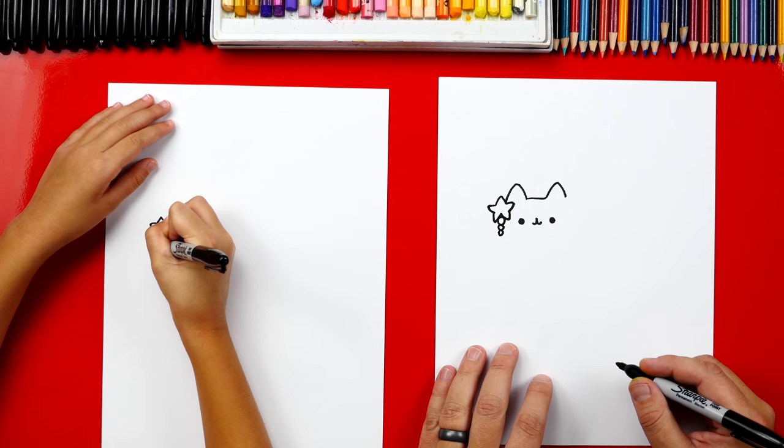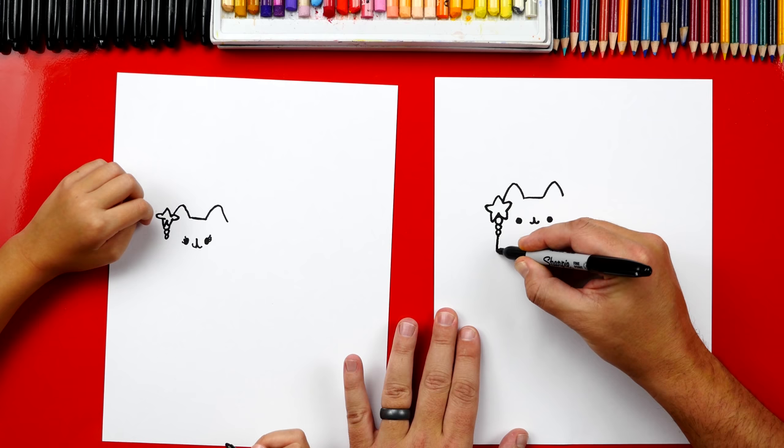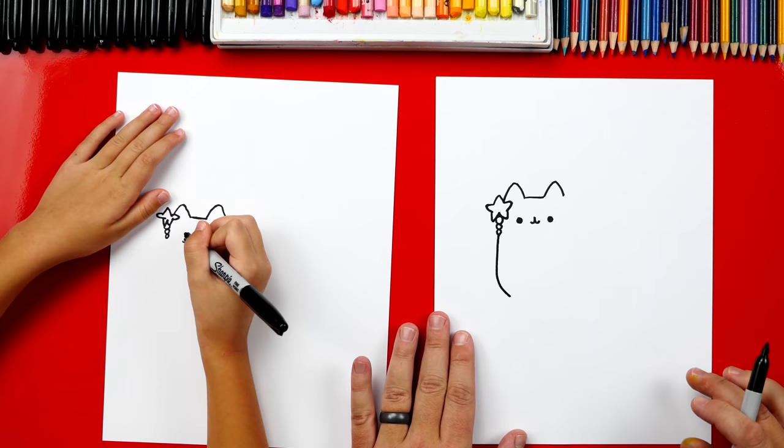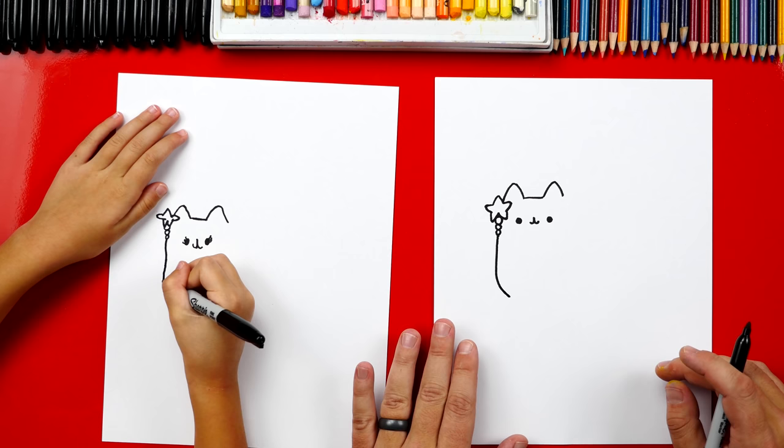Alright, now let's draw her body. We're gonna draw a curve that comes down and curves right at the bottom. I love this version of the Pusheen cat. She's super cute. There you go. Good. I like it.